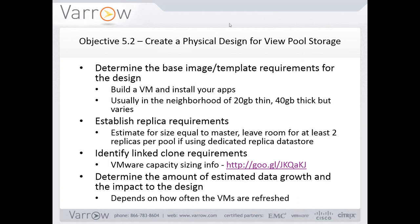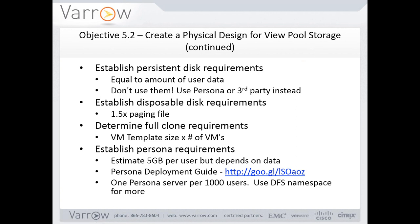Determining the amount of data growth depends on how often the VMs are refreshed and how much data users create. The persistent disk was basically the only way to save user profiles on link clones prior to Persona Management being created. It's a second VMDK attached to each VM where the user profile gets written — basically equal to the size of that user profile. Don't use persistent disks in real-world design — they cause way more headaches than they're worth. For the exam, just know it's essentially equal to the amount of user data.